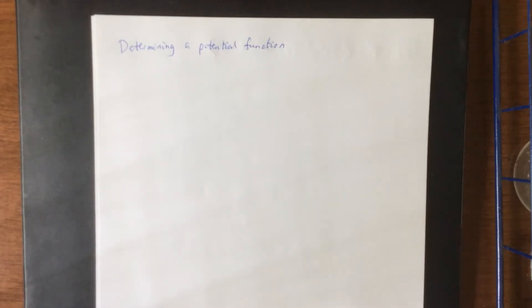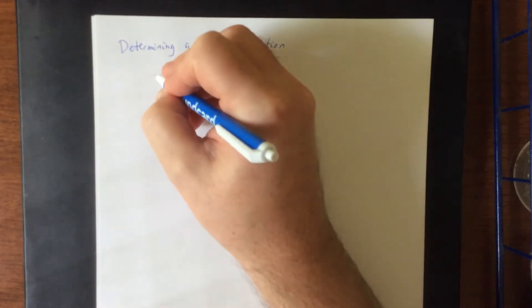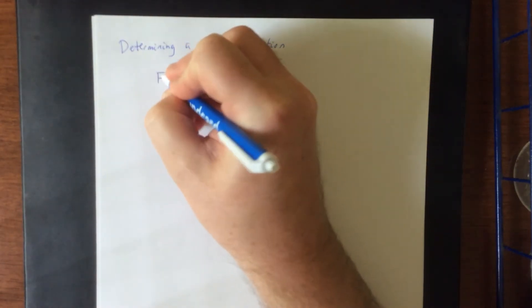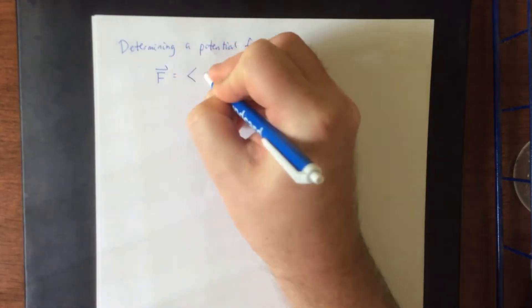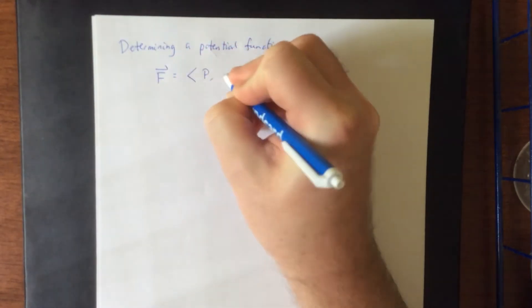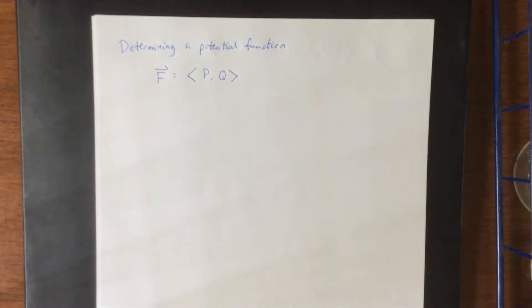So let's say that you've just determined that a two-dimensional vector field is conservative, and now you're interested in determining a potential function. Suppose that you have your two-dimensional vector field. We'll use p and q for the two component functions.